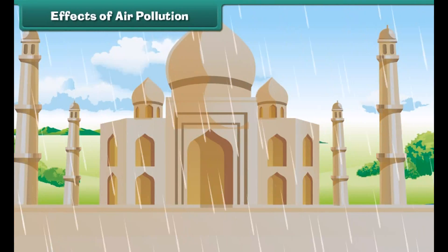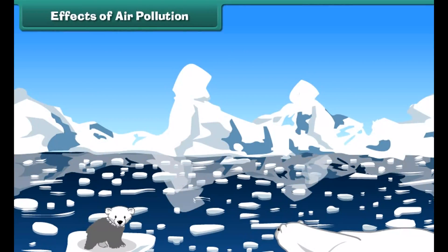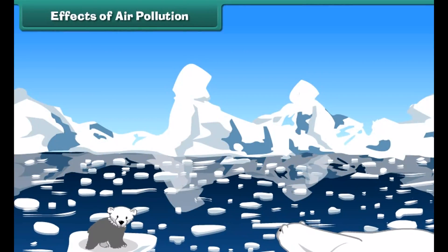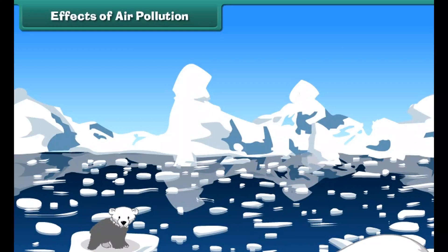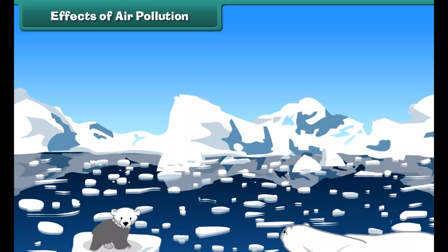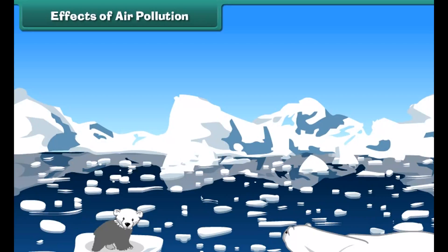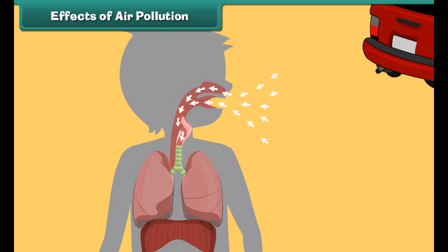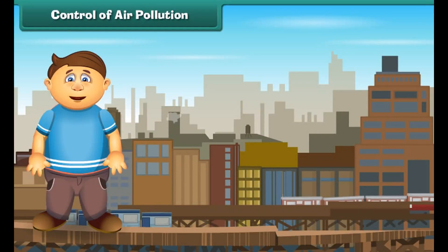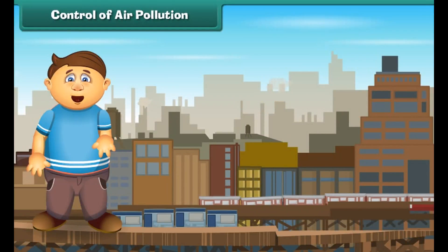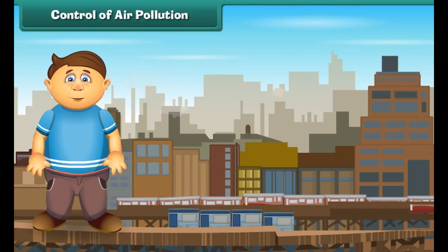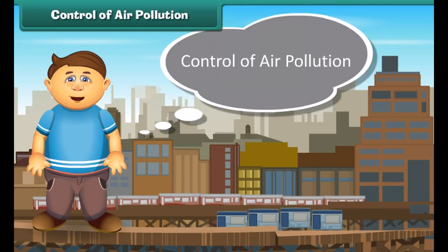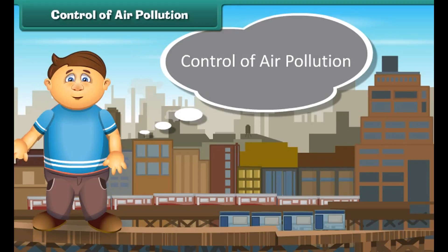Acid rain damages our buildings and monuments. Besides that, the large amount of carbon dioxide in the air increases global temperatures, which subsequently results in the melting of glaciers. It also adversely affects our lungs, and we suffer from respiratory disorders. Now the question is, how can we control air pollution?